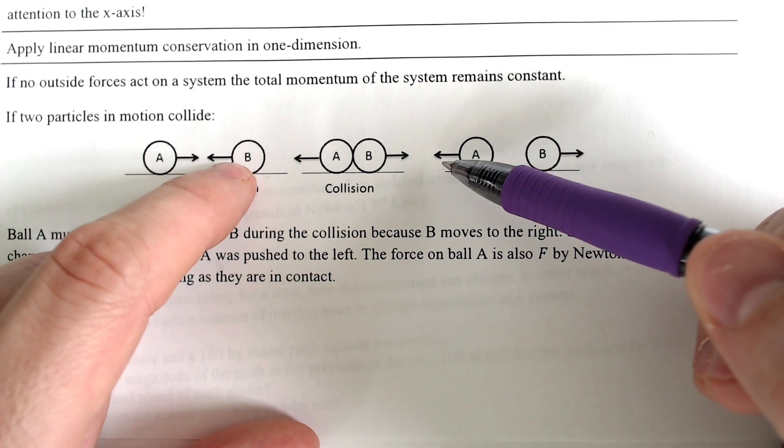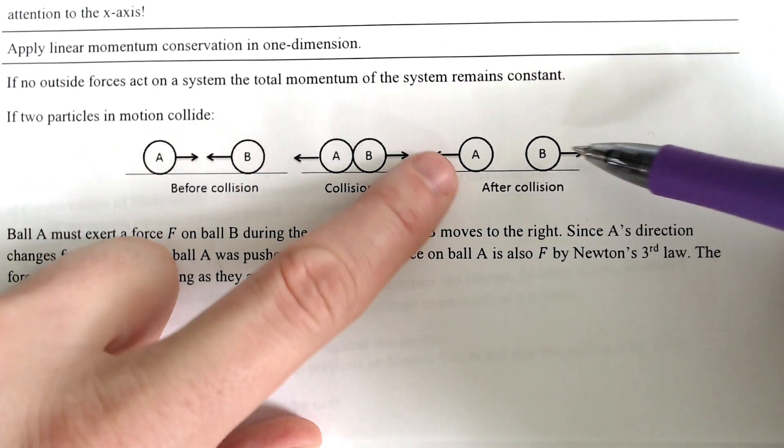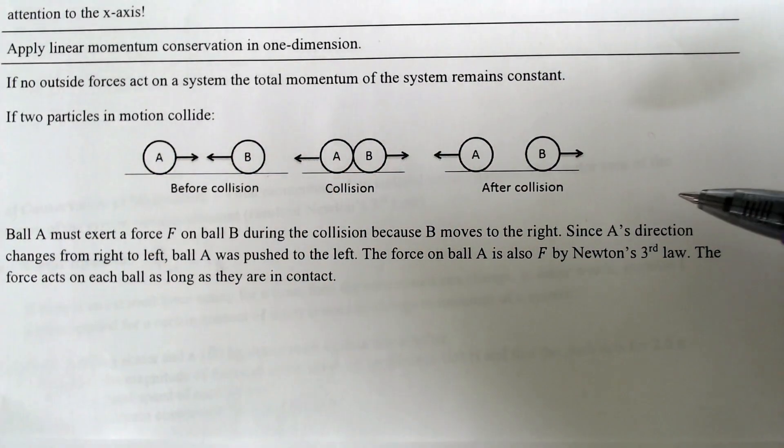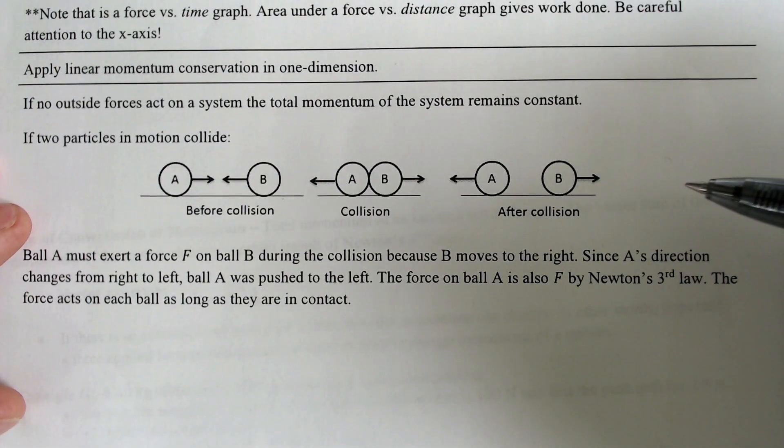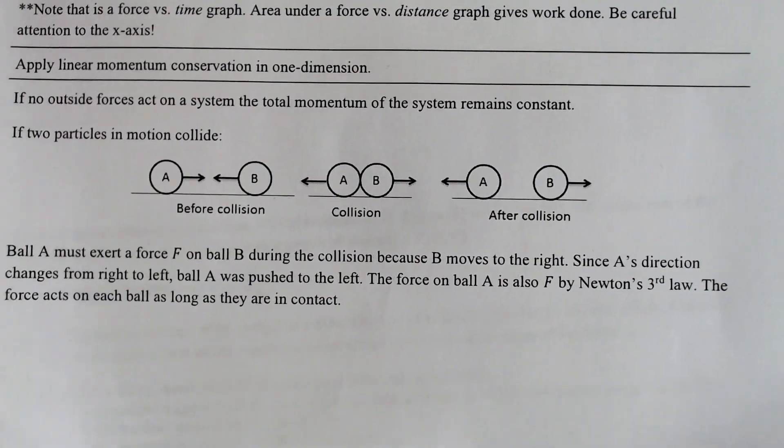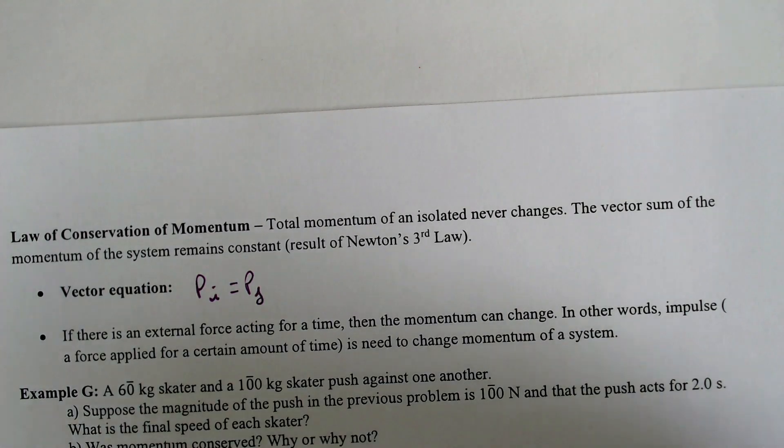they would then bounce backwards in opposite directions. And those opposite directions would match, if there is no friction, the momentum that they had to begin with. So another formula that I like to use,